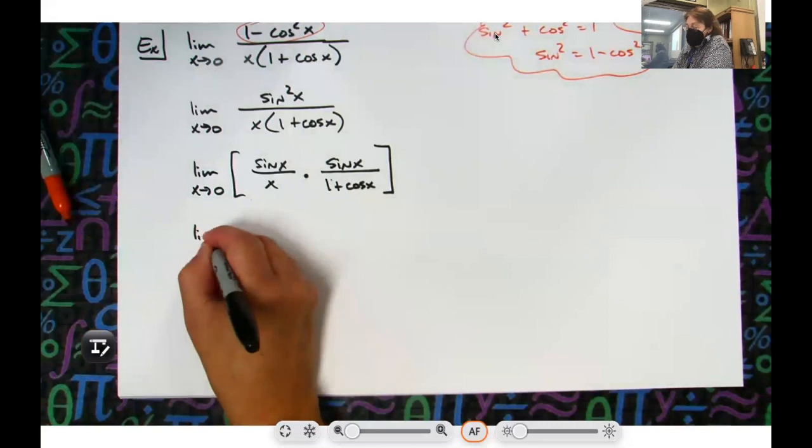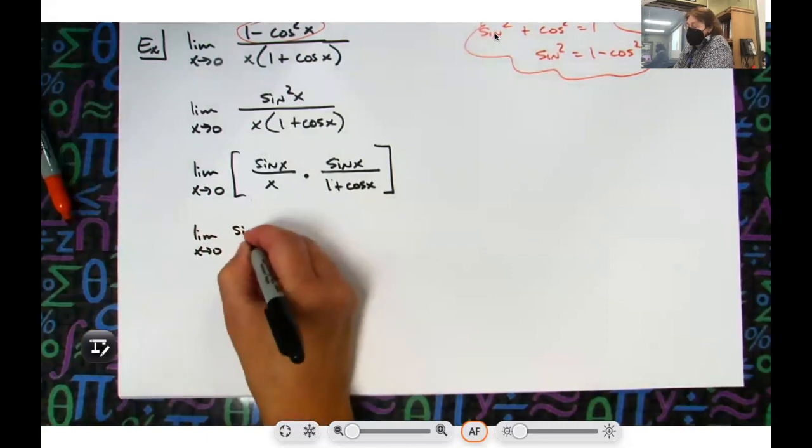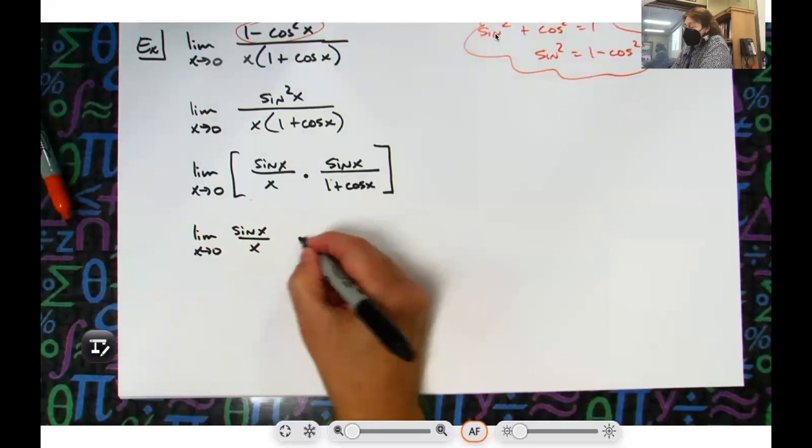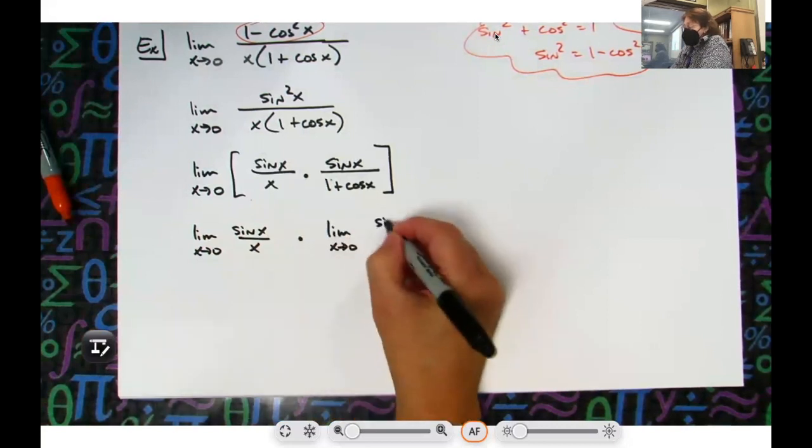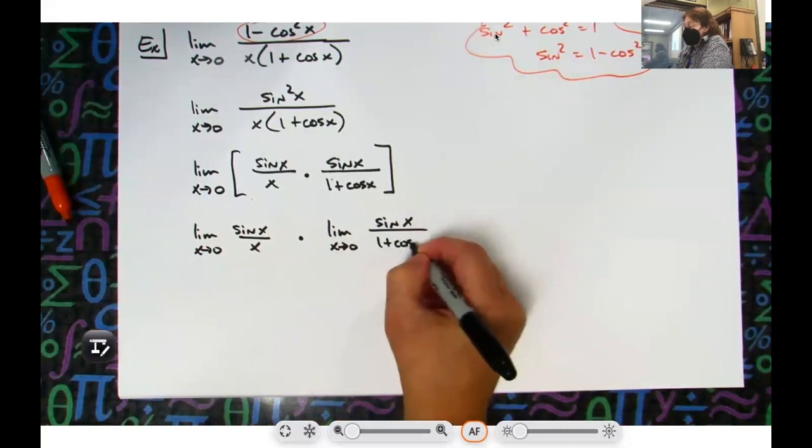The limit as x approaches 0, we'd have sine x over x times the limit as x approaches 0, sine x over 1 plus cosine x.